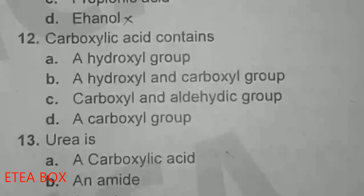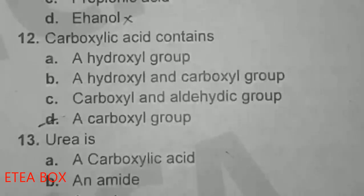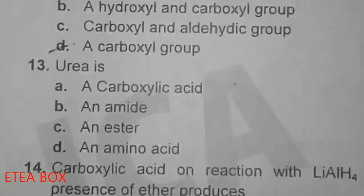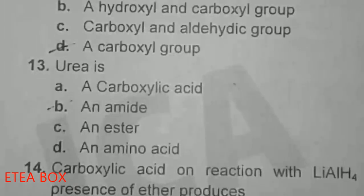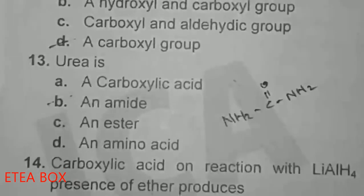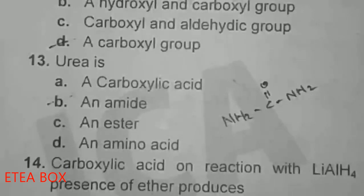Carboxylic acid contains a carboxyl group, which consists of a carbonyl group and a hydroxyl group — carbonyl and hydroxyl. Urea is an amide — option B is correct. The structure of urea is also called carbamide.